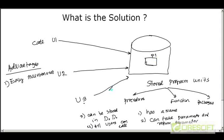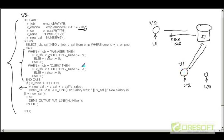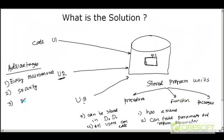The second advantage is security. Program unit P1 is inside the database. Just as accessing a table depends on whether you have a privilege on it, you can grant or revoke execute privilege on a procedure. If execute privilege is not given to user two, user two cannot run it — whereas with an anonymous block, if user two has the code he can simply run it with no security control.